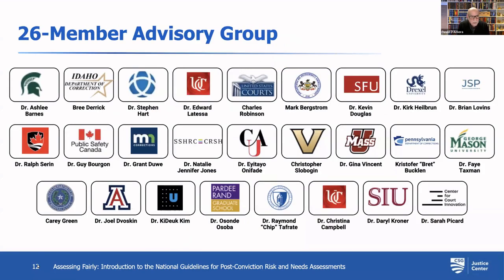The advisory group consisted of 26 members — experts in risk and needs assessment, supervision of individuals in the criminal justice system, traditional methods like logistic regression, machine learning, administrators dealing with the reality of implementing these systems, and experts in bias and lack of equity in the criminal justice system. One of our advisory board members was Dr. Ed Latessa. Many of you no doubt knew him throughout your career. Dr. Latessa was a pioneer in this work, and sadly he left us all too soon a couple of years ago. We are very pleased to put these guidelines forth in his honor.